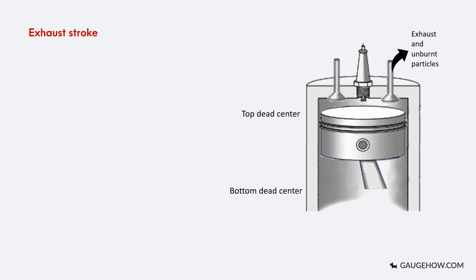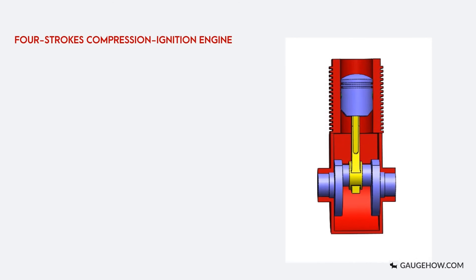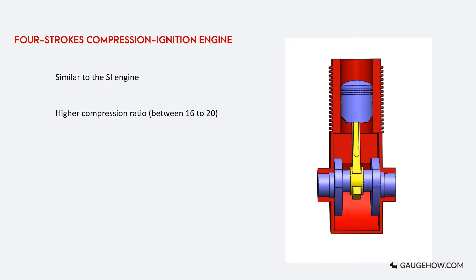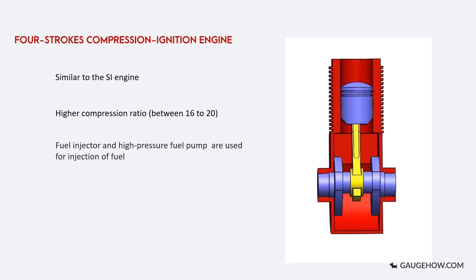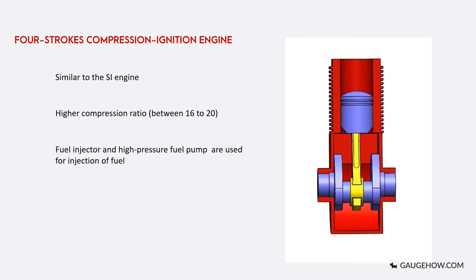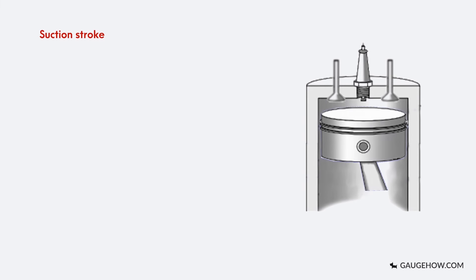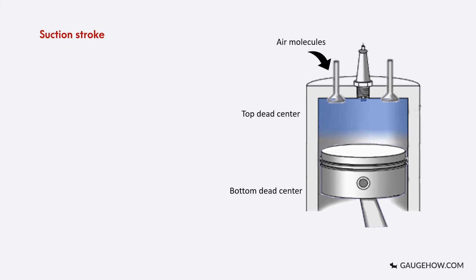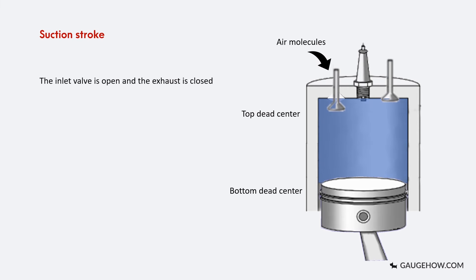The engine then repeats this whole cycle again. The next type is the four-stroke compression ignition engine. The working principle of this engine is quite similar to the SI engine but with a higher compression ratio, which is between 16 to 20. In this engine, only air is inducted instead of an air-fuel mixture. We make use of a fuel injector and high pressure fuel pump for injection of fuel. In the suction stroke, the pressure difference generated by the piston movement pulls air molecules inside the cylinder. During this stroke, the inlet valve is opened and the exhaust valve is closed.